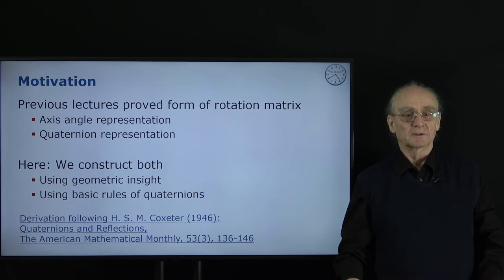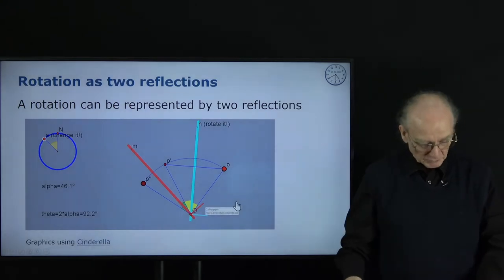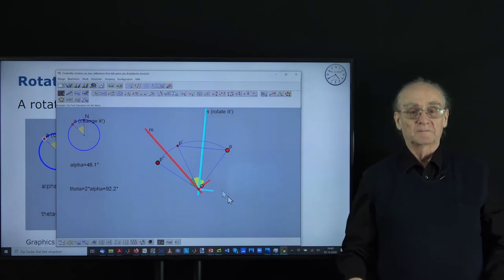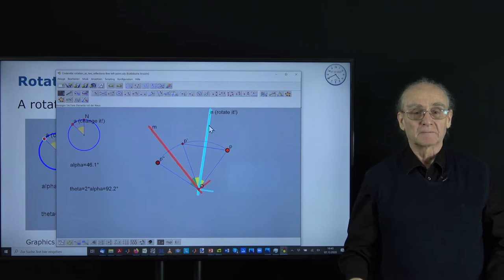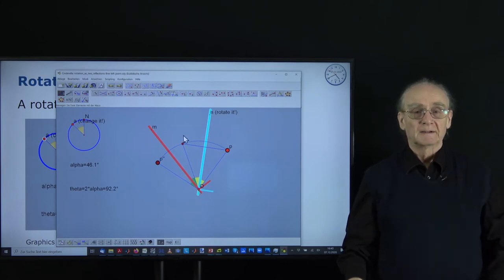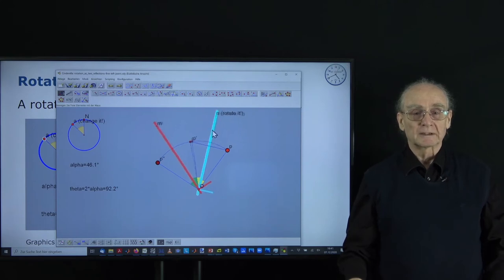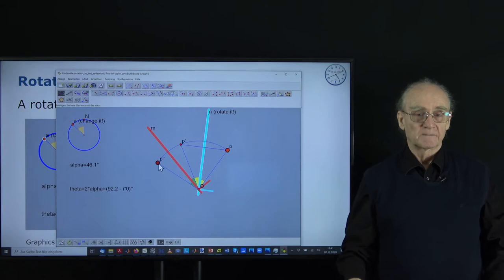He published a paper in 1946 on quaternions and reflections, which I recommend you to have a look at. So let's have a look at the situation. Let's assume we have a point here and we have a reflecting plane here — so this point is reflected to this point. Now we have a second plane here, or in 2D a line, and then we have a reflection which moves this point to here. We see that if we change the two lines simultaneously and leave the angle constant, this point stays where it is.